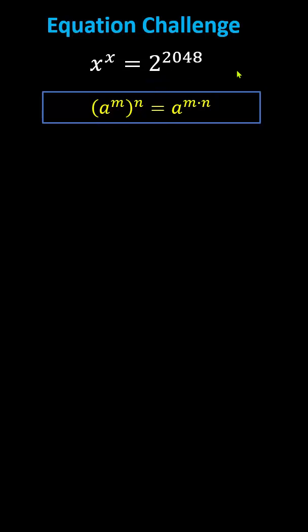To begin, we can write the right side as 2 to the power of the product of 2 and 1024, which is equal to the square of 2 to the power of 1024, which we could write as 4 to the power of 1024.